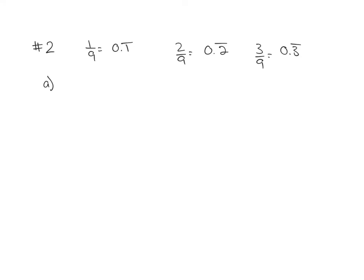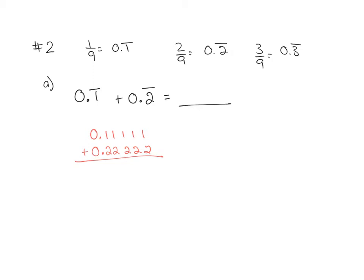For question 2A, they ask you to add the repeating decimals by lining up the decimal places. So they say: 0.1 repeating plus 0.2 repeating equals what? I could rewrite 0.1 repeating as 0.11111 and 0.2 repeating as 0.22222. When I add these together, they all add up to 3s after the 0, so this would become 0.3 repeating, which is kind of like our 1 and 2 repeating going together.